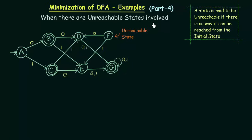Before we start, let us try to understand what is an unreachable state. A state is said to be unreachable if there is no way it can be reached from the initial state. In the DFA that we have here, F is called an unreachable state because there is no way in which F can be reached from the initial state.